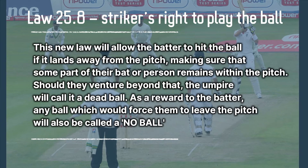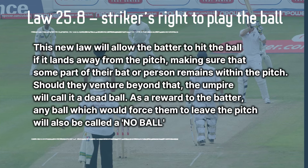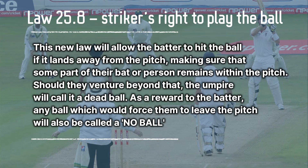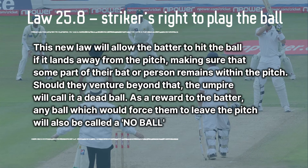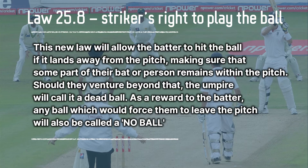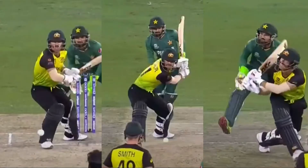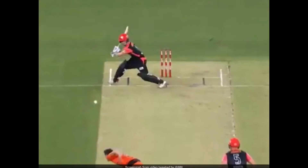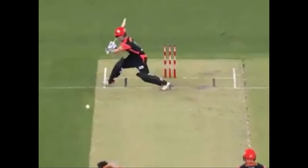The new law will allow the batter to hit the ball if it lands away from the pitch, provided that some part of their bat or person remains within the pitch. Should they venture beyond that, the umpire will call it a dead ball. As a reward to the batter, any ball which forces them to leave the pitch will also be called a no-ball. You may remember David Warner's shot to Mohammad Hafeez in the T20 World Cup 2021 which went for a six — the ball had slipped from the bowler's hand and bounced twice. Now the batter must ensure some part of the bat or person remains on the pitch, and if the delivery forces the batsman to leave the pitch, it will be called a no-ball.